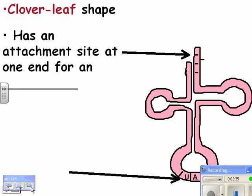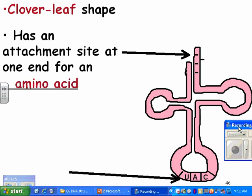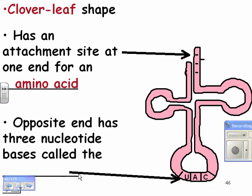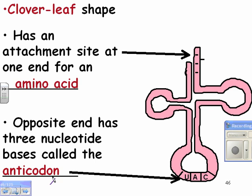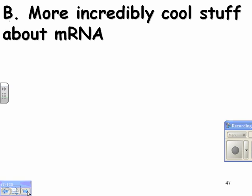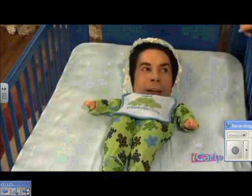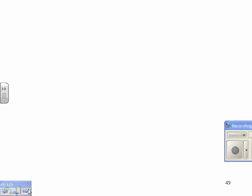Transfer RNA has a cloverleaf shape. It's single-stranded but doubles up in certain regions, and one end has an attachment site for an amino acid. The opposite end has a three-nucleotide sequence called the anticodon. So the codon is what it matches to, and the anticodon is the part of the tRNA.